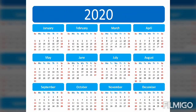In this slide you can see the calendar for 2020. The months are: January, February, March, April, May, June, July, August, September, October, November, and December.